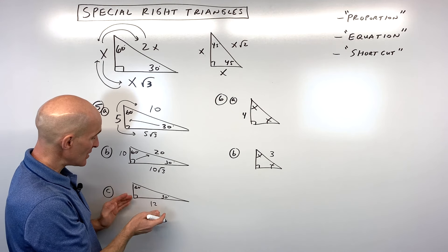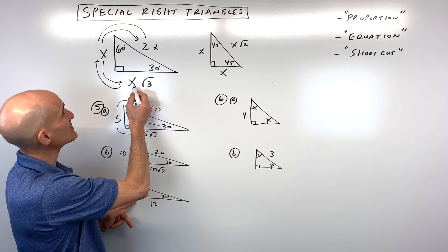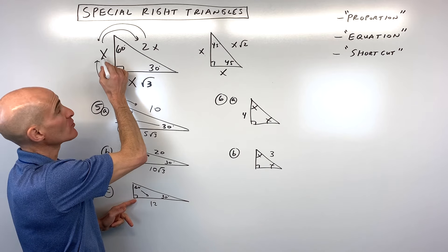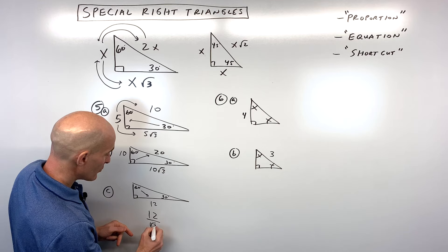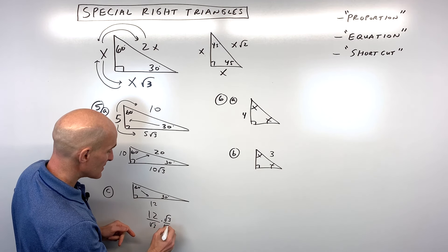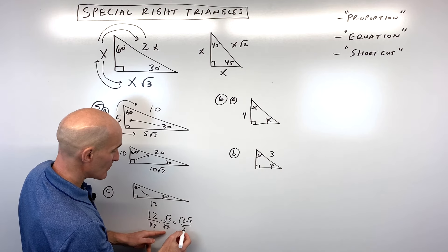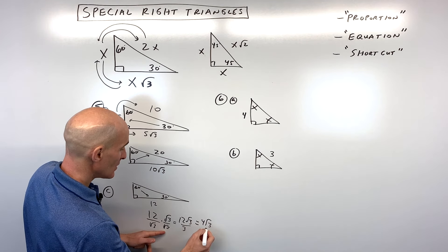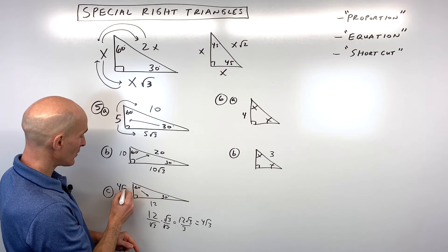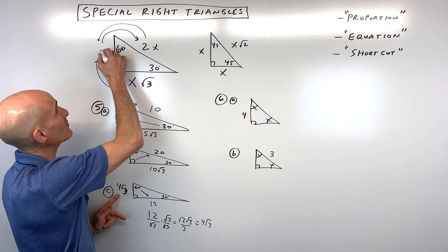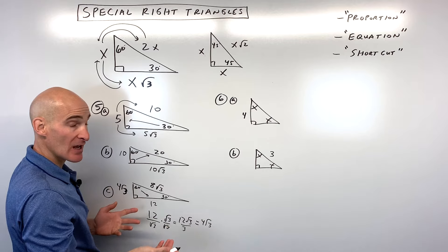The toughest one is letter C, where we're given the side across from the 60-degree angle — the longer leg, the x root 3 side. We have to divide by square root of 3 to get back to x. So: 12 divided by square root of 3, rationalized as 12 square root of 3 over square root of 9 (which is 3). The 12 and 3 reduce to give us 4 square root of 3 for the short leg. We double it to get the hypotenuse: 8 square root of 3. Now you have all three sides.